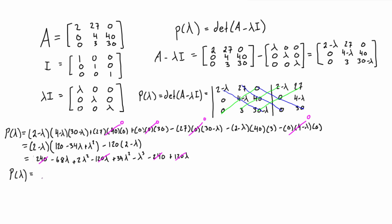So if we do the final simplification here, we get negative lambda cubed plus 36 lambda squared minus 68 lambda. And this is the characteristic polynomial of A. So if that's all your professor is looking for, then you can put a box around it and stop here.